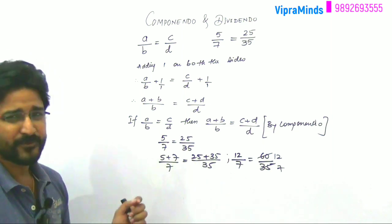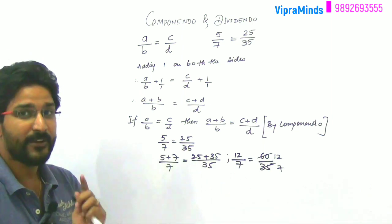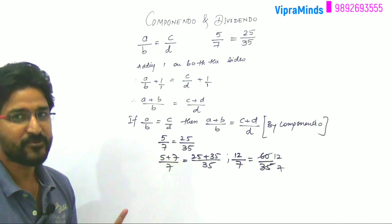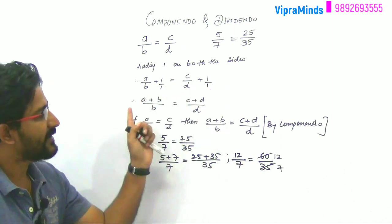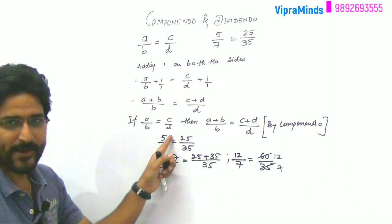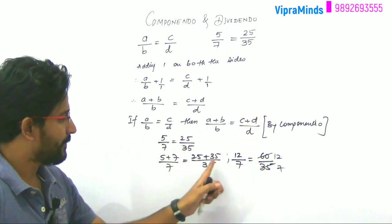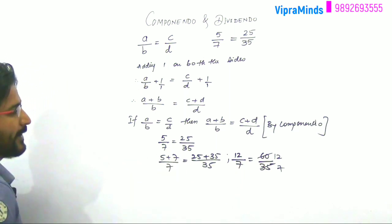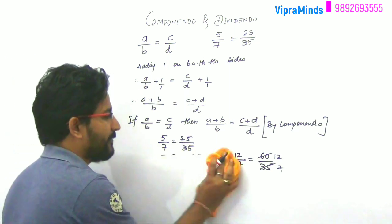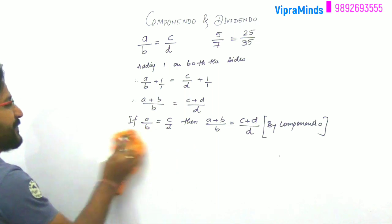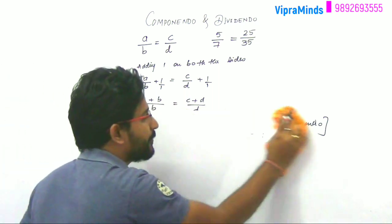There are so many proofs or numericals that we have to simplify to make the property a lot of use. So this is Componendo property. I can write this also: a plus b by b equals c plus d by d. This is Componendo property.